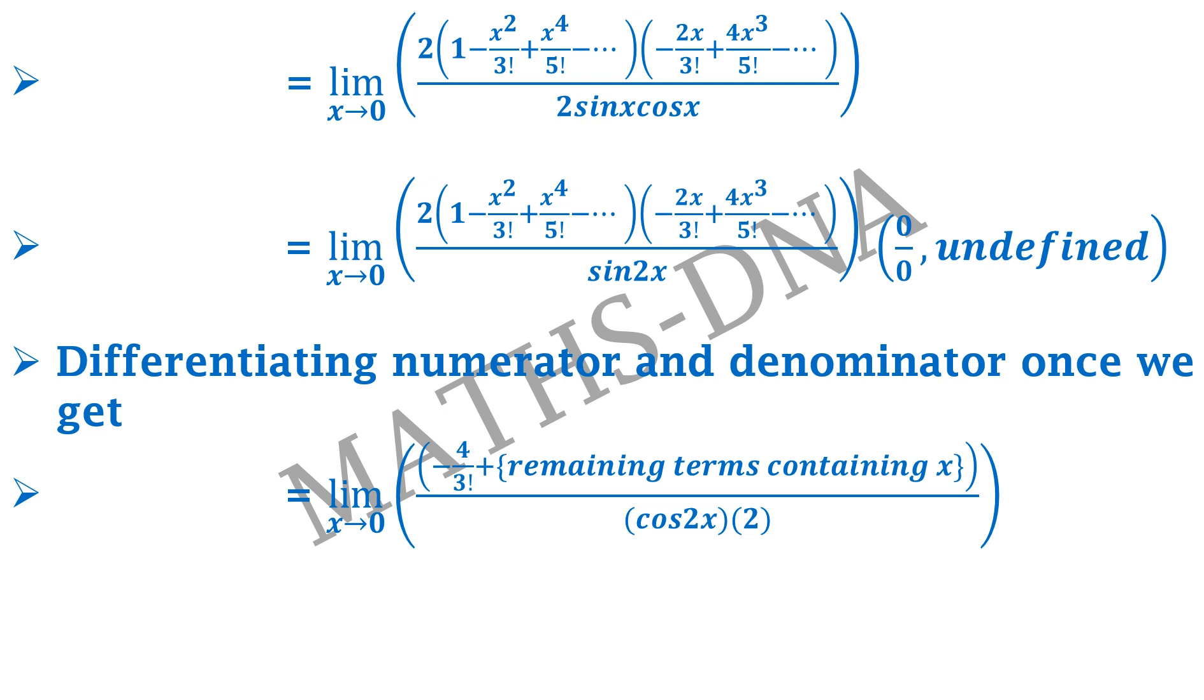The denominator's differentiation will be sin's differentiation is cos 2x and into 2, that is chain rule. Now we get limit x tends to 0, minus 4 upon 2 into 3 into 2 into 1. Now this 2 is from the denominator and cos 0 will be 1, so cos 0 removes and we only get 2 into 3 into 2 into 1, and that will give us the final result as minus 1 upon 3, and that is option c.